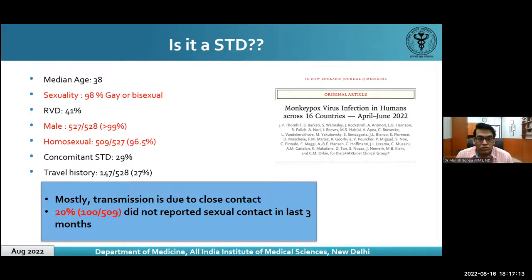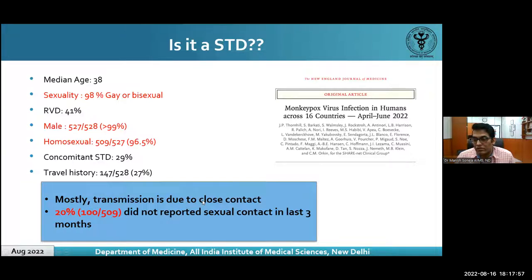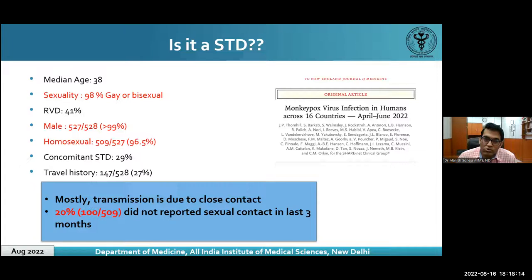This raises the question: is it an STD? The NEJM paper data shows similar findings — median age is young, 98% MSM, more than 99% males, concomitant STD in nearly 30% of cases, travel history in only 27%. However, 20% did not report any sexual contact in the last 3 months. The virus is causing mostly genital rash and spreading via direct skin-to-skin contact in MSM, but it is not prudent to label it as an STD.